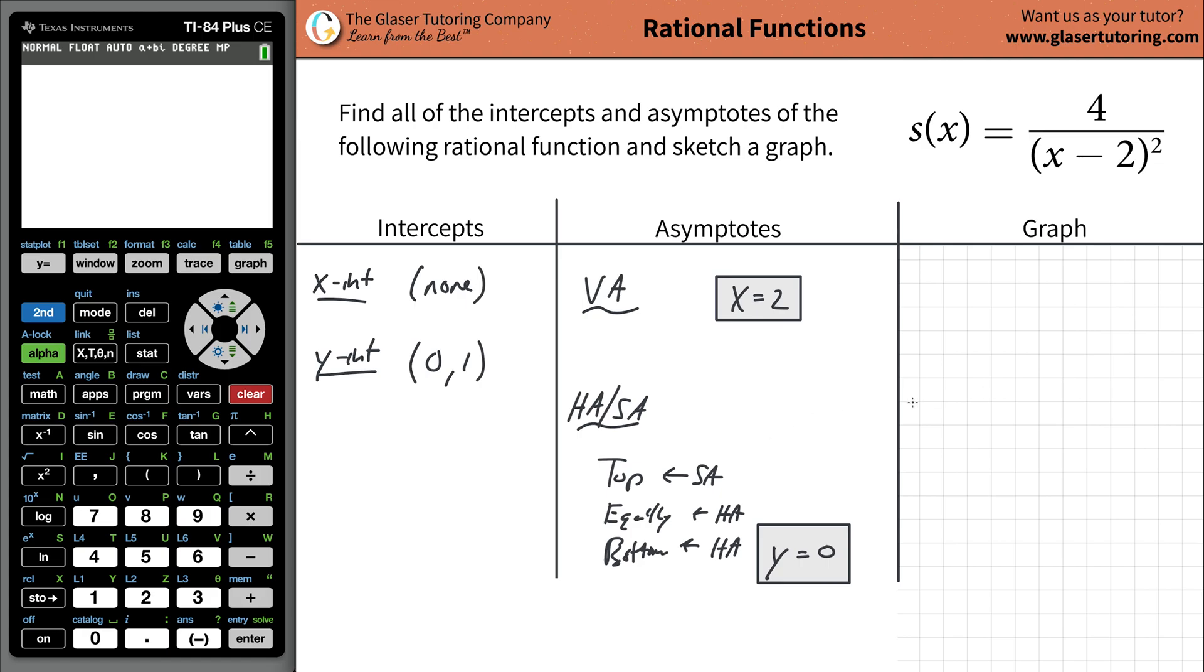Now that we have everything, all these pieces, we can finally graph this thing. Let's set up a set of axes. First thing I'll do is graph the x-intercept. Well, there's none, so I don't have to worry about that. And the y-intercept of (0, 1) will be right here. Next thing I do is plug in my vertical asymptote at x equals 2. So I draw a line at x equals 2 and dash it. Then I have a horizontal asymptote at y equals zero.